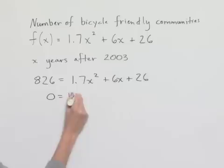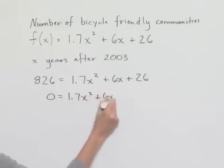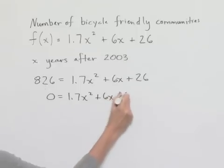0 equals 1.7x squared plus 6x, and 26 minus 826 is minus 800.